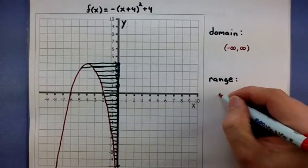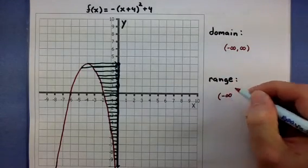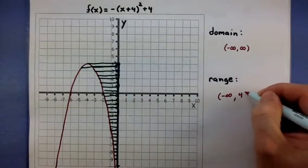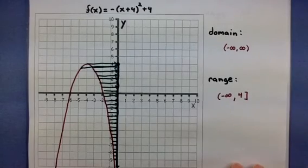Therefore I can say that my range starts at -∞, all these negative values here, and goes all the way up to 4, and even includes 4, but doesn't go beyond that.